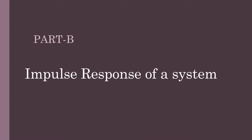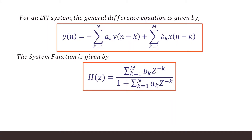Hello students. Let us consider the program for computation of impulse response from the difference equation or the transfer function. Here we can observe the general difference equation describing any LTI system. The description is in terms of the outputs y and inputs x. The coefficient of x is dk and the coefficient of y is ak. A similar description is provided by the system function h, and the relation between the two is established using the z-transform.